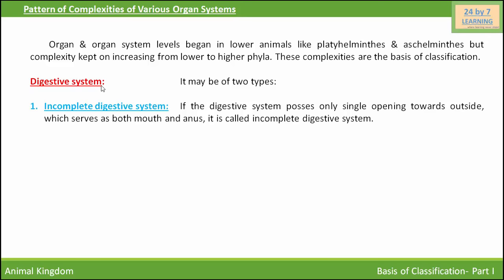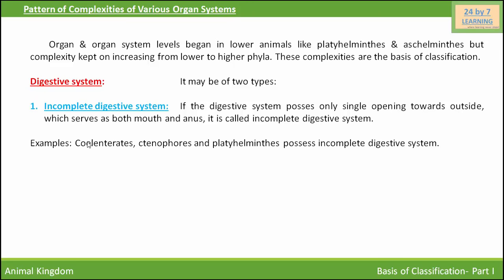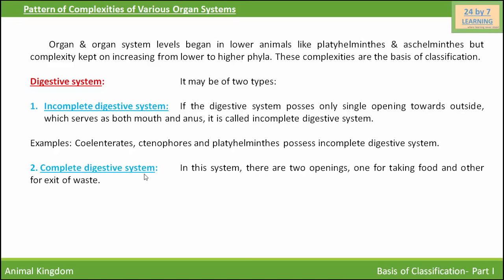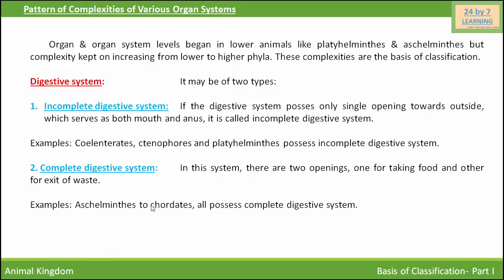Taking the example of the digestive system: it may be of two types — incomplete or complete. In an incomplete digestive system, there is only a single opening to the outside which serves as both mouth and anus. This is present in coelenterates, ctenophores, and platyhelminthes. In a complete digestive system, there are two openings — one for taking in food (mouth) and one for exit of waste (anus). This is found from aschelminthes to chordates.